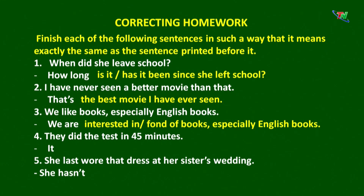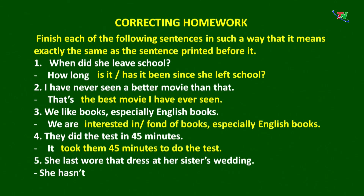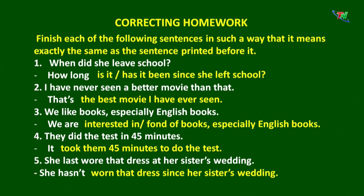Câu số 4: 'They did the test in 45 minutes.' Chúng tôi đã làm bài kiểm tra trong vòng 45 phút. Chúng ta có cấu trúc: 'take somebody amount of time to do something.' Vậy ở đây chúng ta có thể viết lại câu như sau: 'It took them 45 minutes to do the test.' Họ mất 45 phút để làm bài kiểm tra. Và câu cuối cùng: 'She last wore that dress at her sister's wedding.' Ở đây chúng ta vận dụng cấu trúc biến đổi từ quá khứ đơn sang hiện tại hoàn thành. Khi câu có 'last' chúng ta sẽ chuyển thành phủ định của hiện tại hoàn thành, và 'at' sẽ chuyển thành 'since'. Vậy chúng ta có câu: 'She hasn't worn that dress since her sister's wedding.' Như vậy chúng ta đã vừa chữa xong bài tập về nhà.